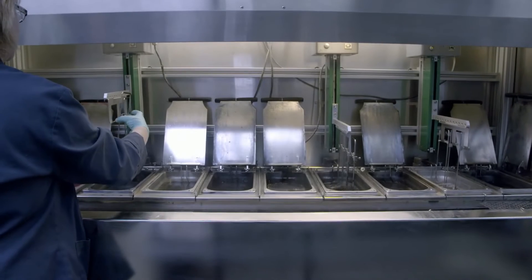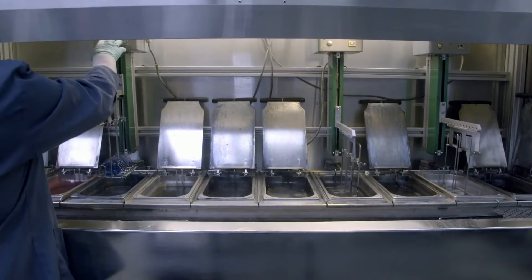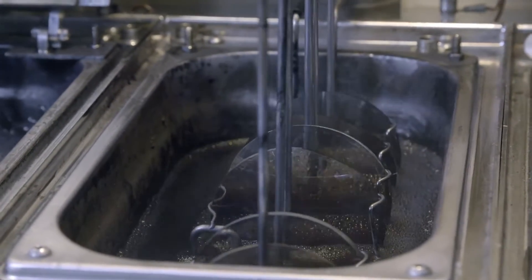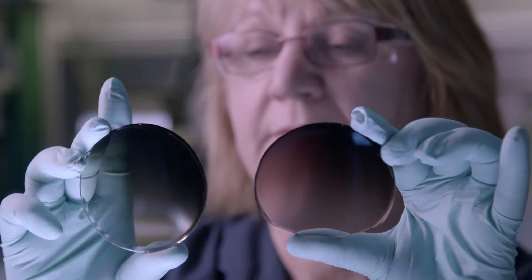If the lenses are to be tinted, they are sent to the tinting laboratory. Each lens is then soaked in different baths depending on the desired hue. They are then verified by comparing them with the reference samples.